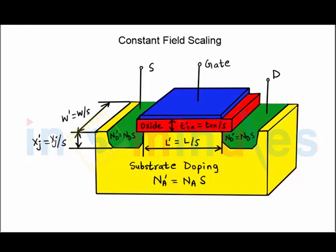Welcome to in 5 minutes. The agenda of this clip is to understand the effect of constant field scaling on various parameters of a MOS transistor. As we have seen in the previous clip, in constant field scaling all the parameters including the voltages are scaled down by a factor of s.